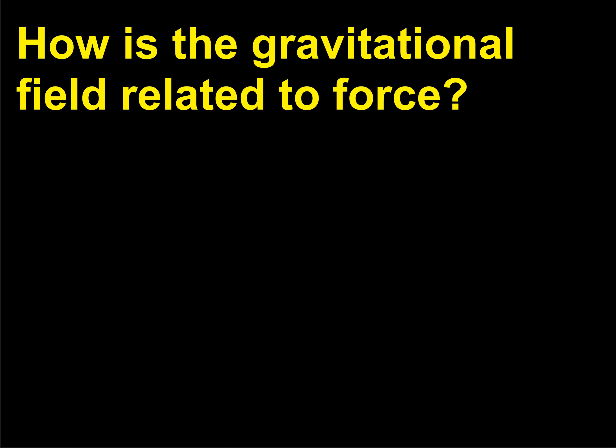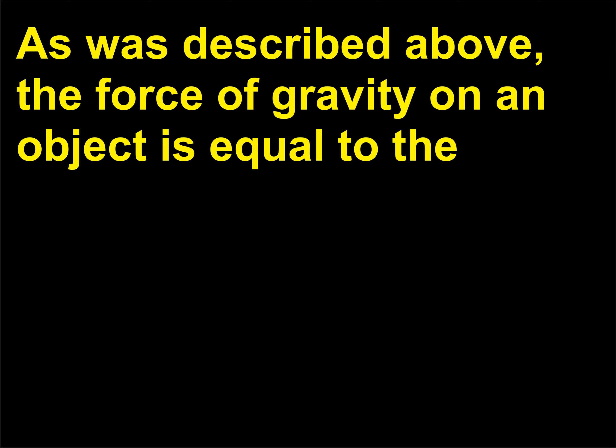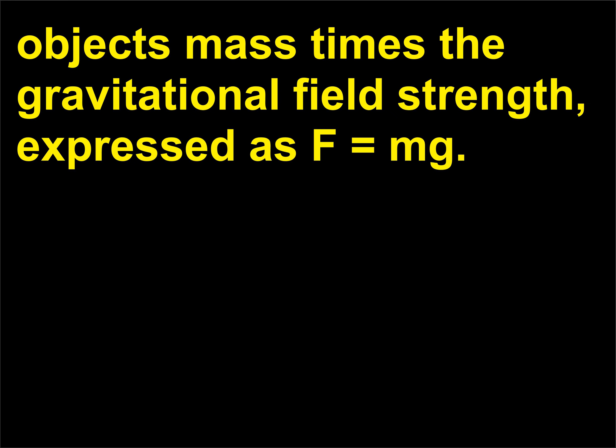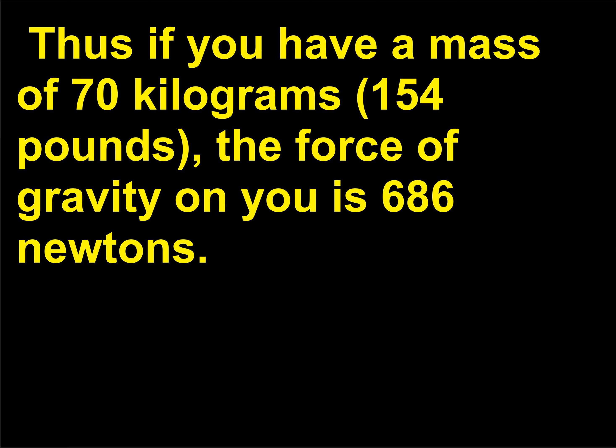How is the gravitational field related to force? The force of gravity on an object is equal to the object's mass times the gravitational field strength, expressed as F = mg. Thus if you have a mass of 70 kilograms (154 pounds), the force of gravity on you is 686 newtons.